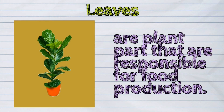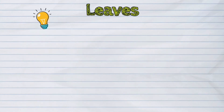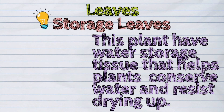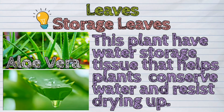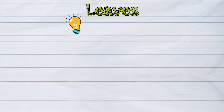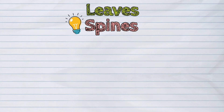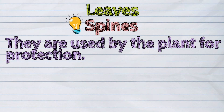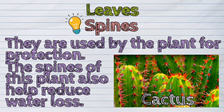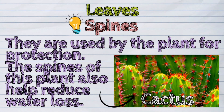The leaves are plant parts responsible for food production. Some plants have modified leaves. For example, storage leaves have water storage tissue that help plants conserve water and resist drying up — an example is aloe vera. Some plants also have spines, which are modified leaves used by the plant for protection. An example is a cactus; its spines also help reduce water loss.